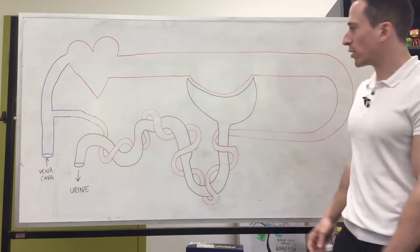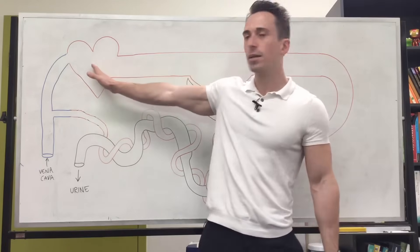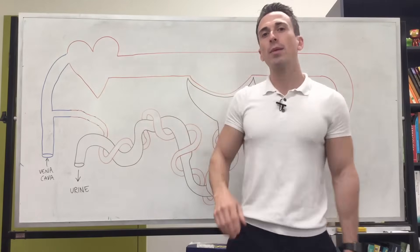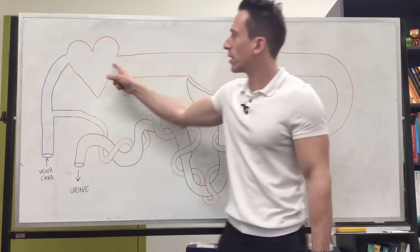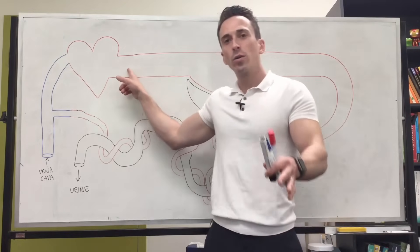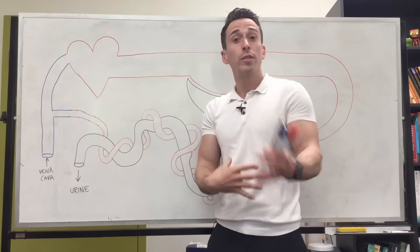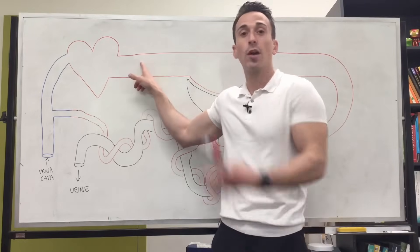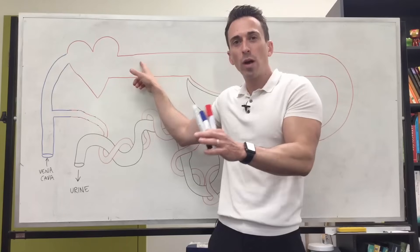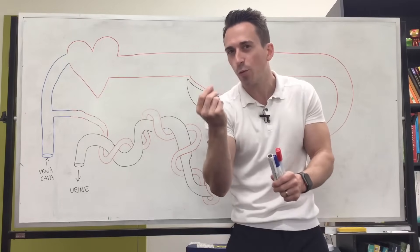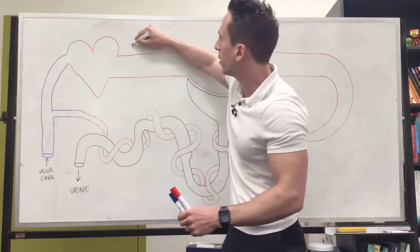I've drawn up a diagram on the board. We've got the heart, and coming out of the left side of the heart — specifically the left ventricle — we've got the aorta, which has multiple branches. In the abdomen, one of its branches is the renal artery going to the kidneys. What I've isolated here is one of the very small branches of the renal artery that we call an afferent arteriole.